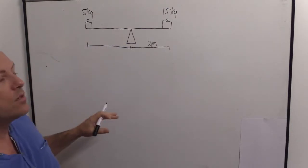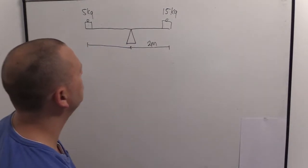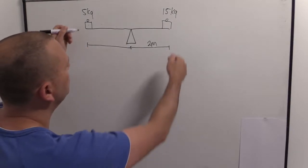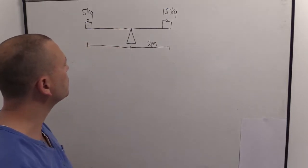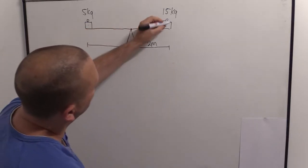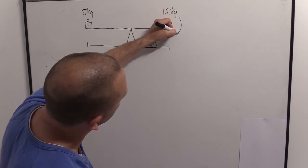We've got a distance this side of two meters and what we don't know is the distance this side. So let's just have a look at this system. What's it gonna do? So we've got two weights here, we've got fixed point in the middle, and this one is going to want to kind of rotate that way.